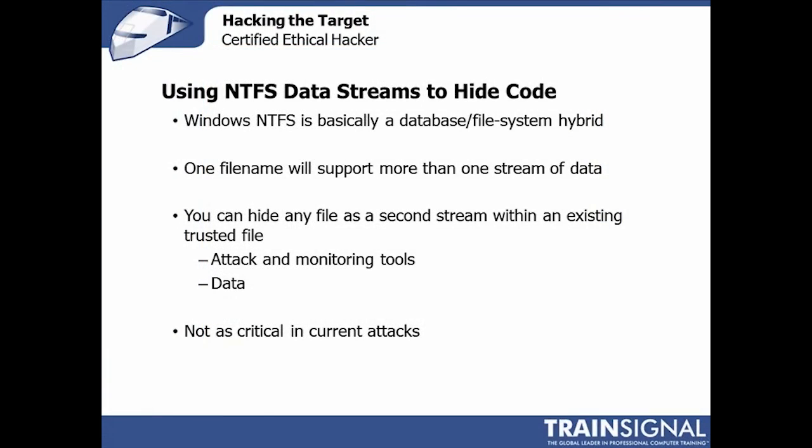You probably want to know what NTFS data streams are. They're easy to understand when you know that NTFS, the NT file system that stores files and folders on the hard drive, is basically just a database. A database that can have one record entry — let's call it mydocument.txt — typically has one data stream, one chunk of data behind it. But because it's a flexible database, NTFS allows us to store more than one data stream behind a file.